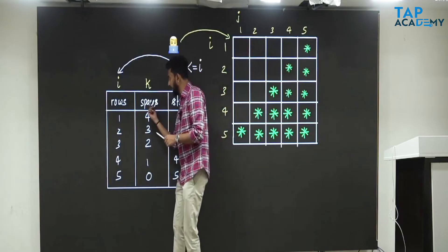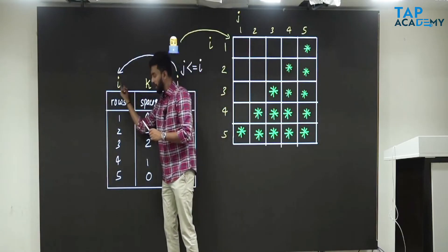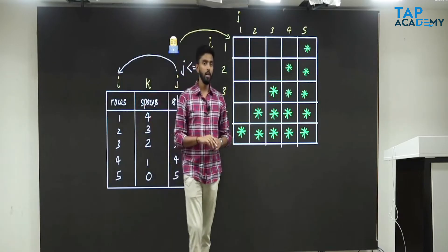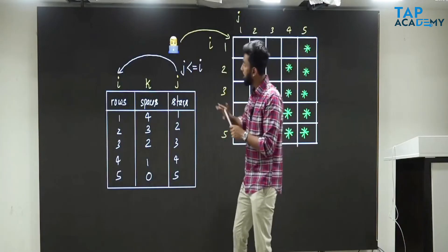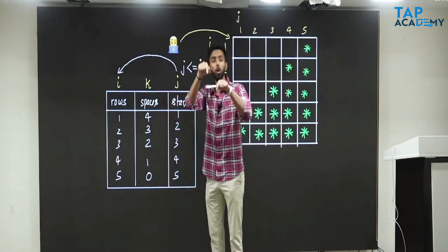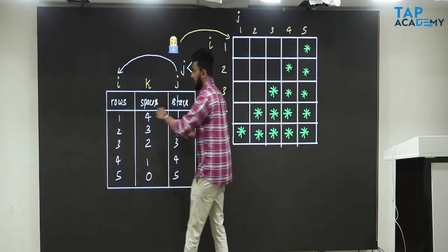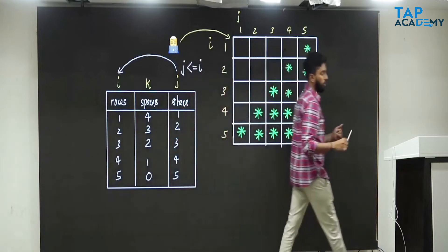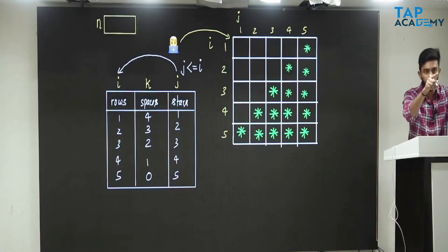Now you must find a relationship between K and I — between the number of spaces and the row number. In programming, you must always find what you don't know from what you know. What I know is the row number. One more thing I know is the number of rows, and the number of rows is inside which variable? N. How many rows are there? Five rows. Now you should think: you know I, you know N, you want K. How will you find that?